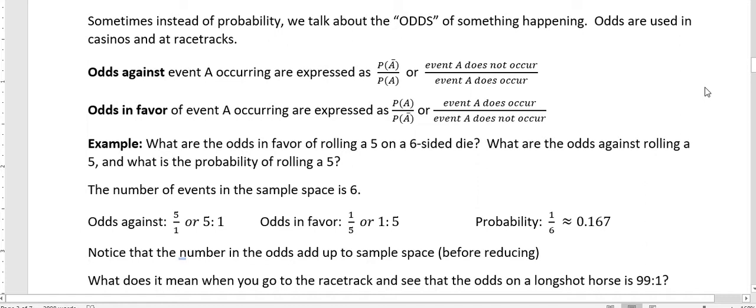So the odds in favor, well, the number of events in our sample space is six. One time out of six, you will roll a five. And five other times, you won't. So when we're talking about odds against, looks like I did odds against first here. Odds against, five times we will not get a five. One time we will. So the odds against are five to one.